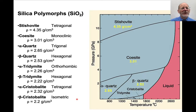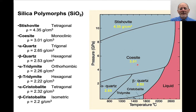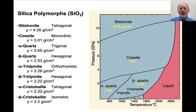Let's talk about silica polymorphs. There are many polymorphs of SiO2 — this is pressure versus temperature. At very high temperatures it'll melt and we get a liquid, but there are various polymorphs stable at ultra-high pressure: stishovite and coesite. At low pressure and temperature, alpha quartz is stable — this is the kind of quartz you see all the time. At elevated temperatures and low to moderate pressures, beta quartz is stable, which has hexagonal symmetry. And at very low pressures and very high temperatures, there are the silica polymorphs tridymite and cristobalite.